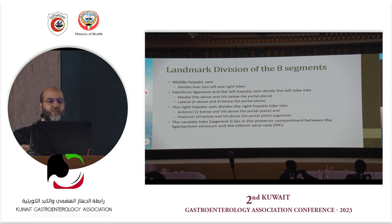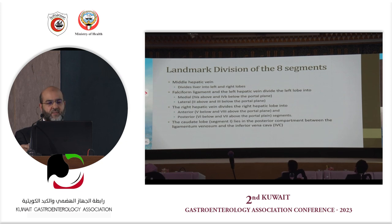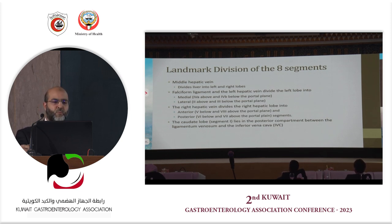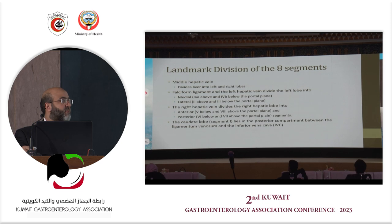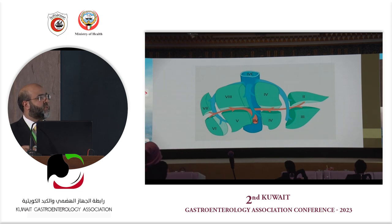The gallbladder and liver hilum are key landmarks. The middle hepatic vein divides the liver into left and right lobes. In the left lobe, the falciform ligament and left hepatic vein divide it into medial segments 4a and 4b, and lateral segments 2 and 3. The right hepatic vein divides the right lobe into anterior and posterior segments. The caudate lobe lies between the ligamentum venosum and the inferior vena cava.